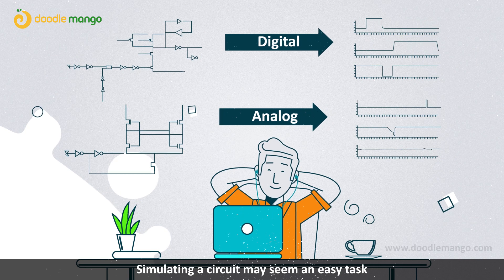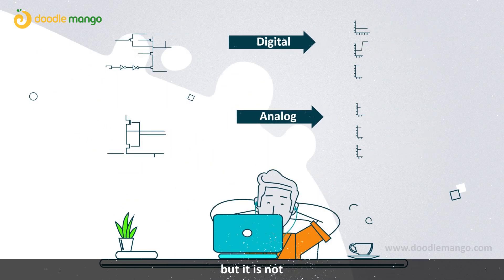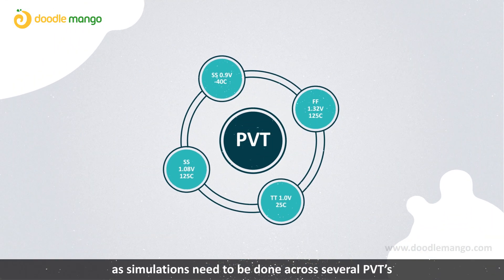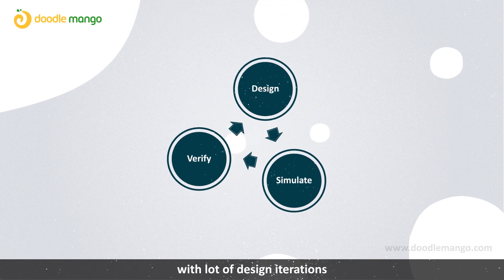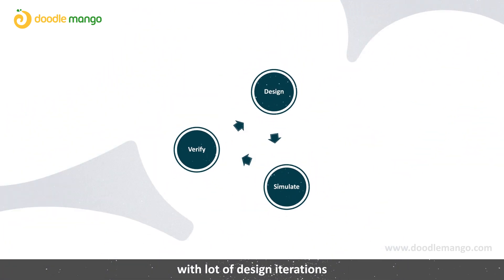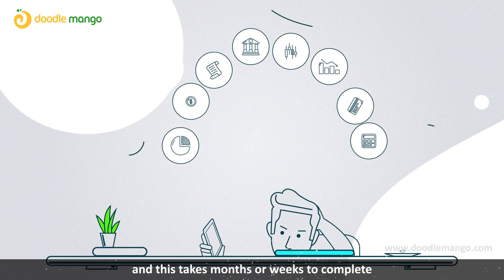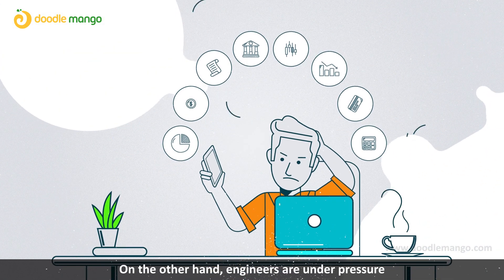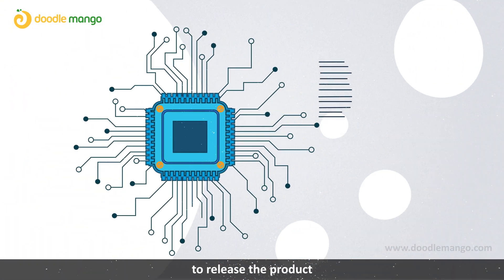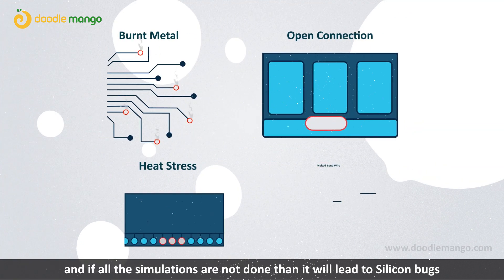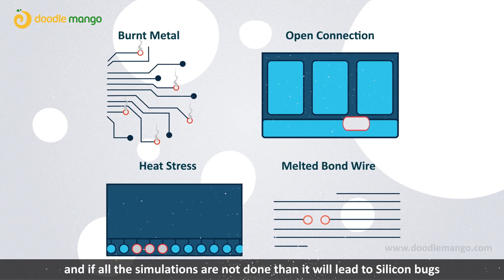Simulating a circuit may seem an easy task, but it's not. Simulations need to be done across several PVTs, with a lot of design iterations, and this takes months or weeks to complete. On the other hand, engineers are under pressure to release the product, and if all the simulations are not done, it will lead to silicon bugs.